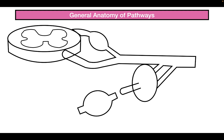I would like to start off with the general anatomy of the pathways, and in order to do that we have to look at this diagram here. This right here is the spinal cord, and what we see here are a few main sections. This part of the spinal cord is the dorsal horn, this middle part is the lateral horn, and this part is the ventral horn.